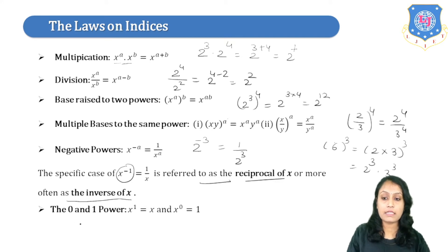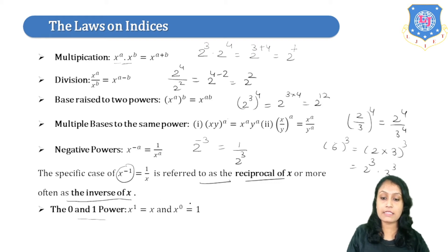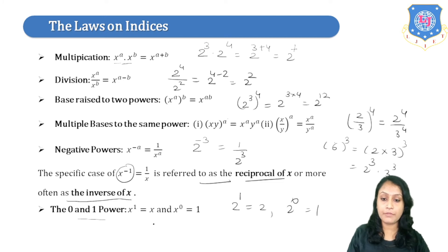The next law covers zero and one powers: x raised to 1 gives you x, and x raised to 0 gives you 1. For example, 2 raised to 1 gives 2, and 2 raised to 0 gives 1.